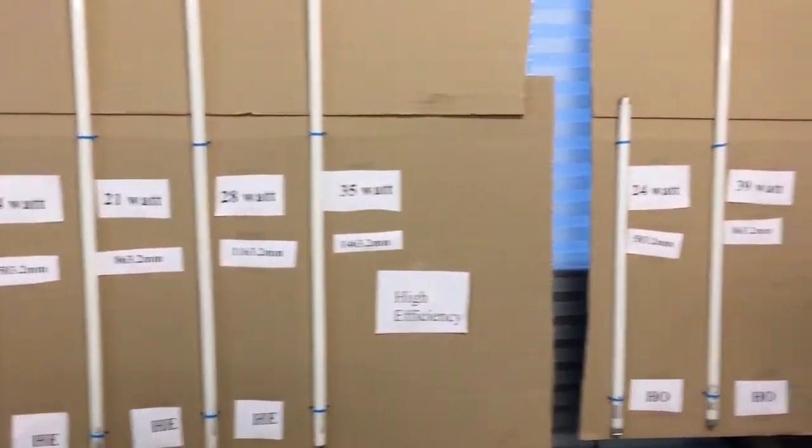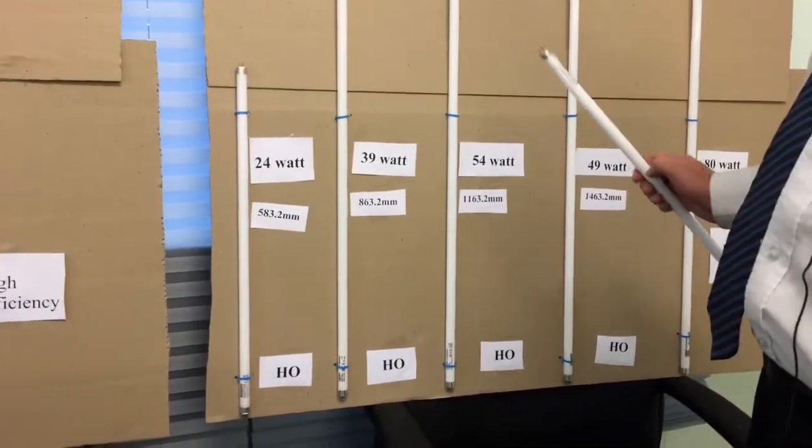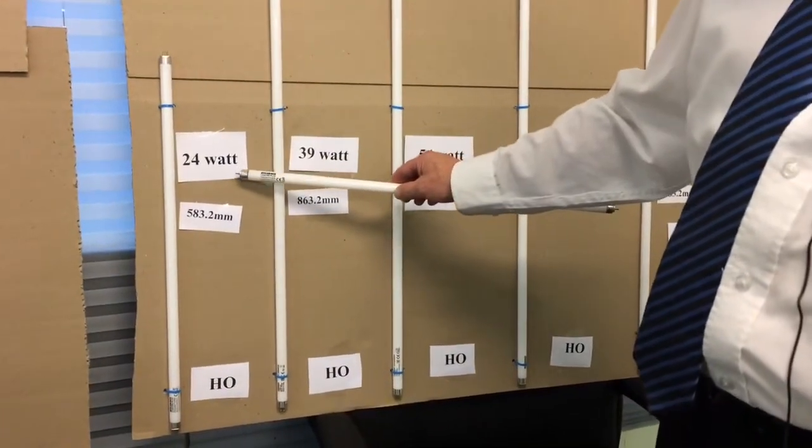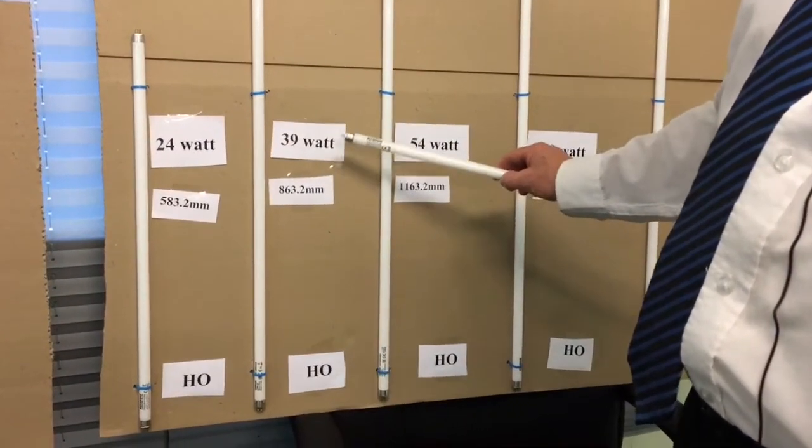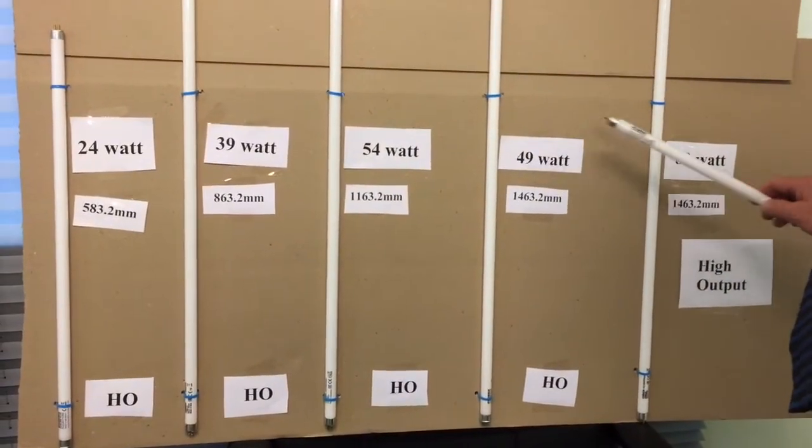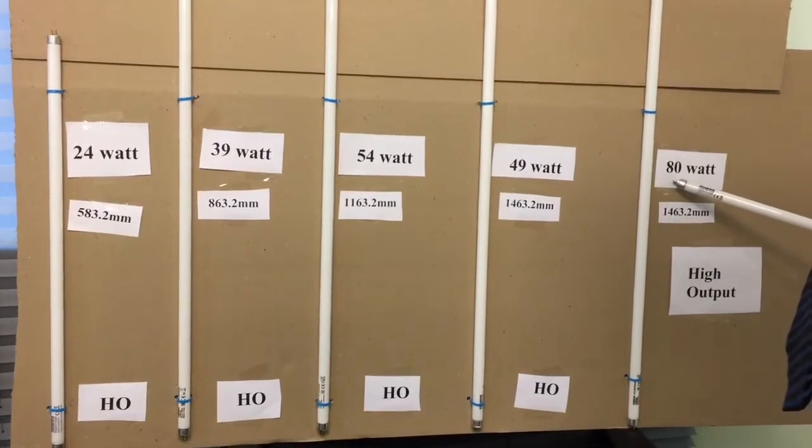However, with the HO, they come in five different wattage types starting off with 24 watt, 39 watt, 54 watt, 49 watt, and the 80 watt.